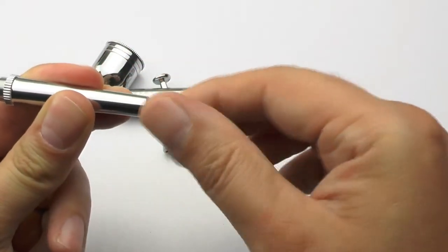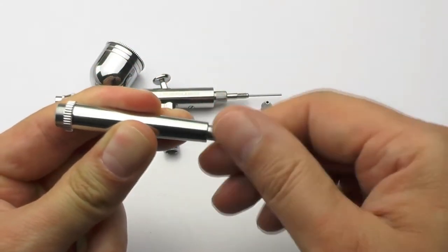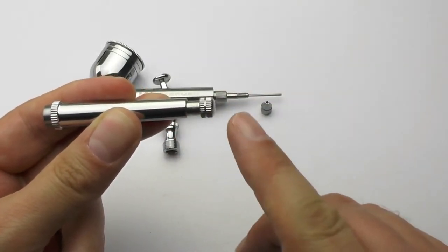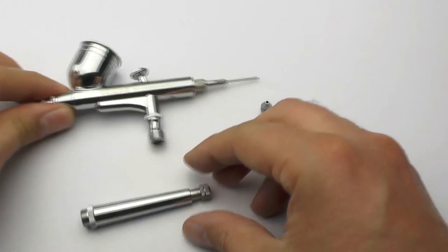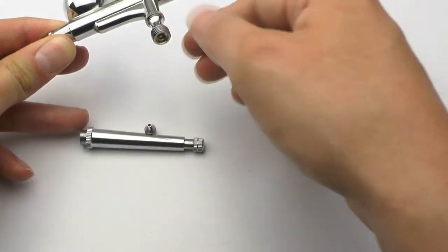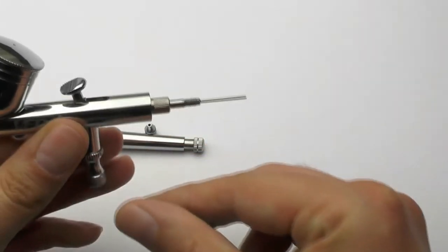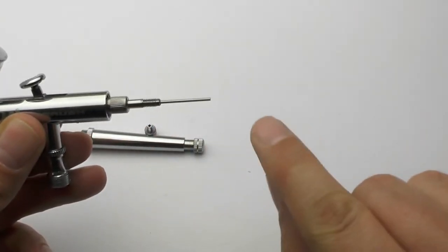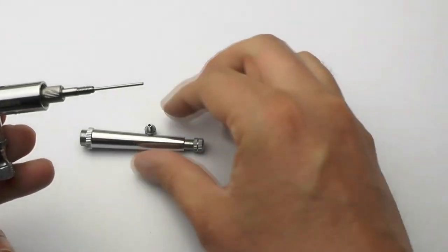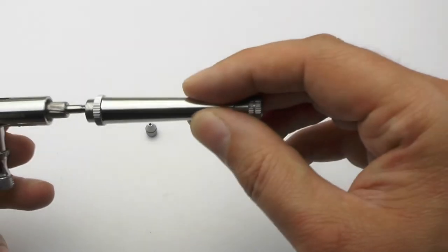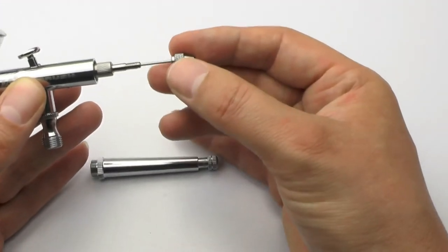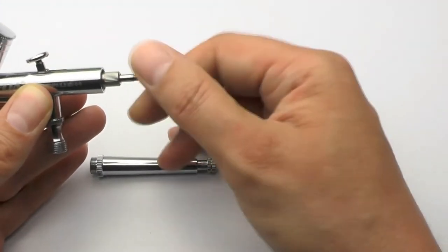Some models actually have an adjusting screw. Obviously the further that comes out the further that will allow the needle to travel backwards, so it's just a means of adding a stopping facility so that you can actually dictate the amount of paint that is sent out.